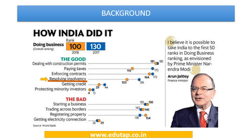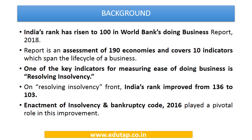Let's start our discussion with the improvements India has made in the Ease of Doing Business ranking, which is issued by the World Bank annually. India's rank has improved from 130 in 2017 to 100 in 2018. This ranking is based on multiple indicators, and one indicator in which India has fared well is resolving insolvency — where India's rank improved from 136 to 103.